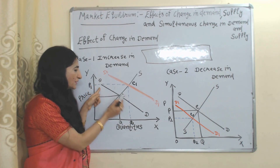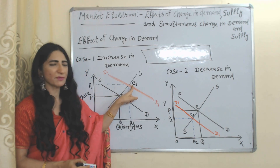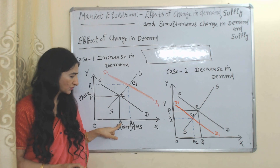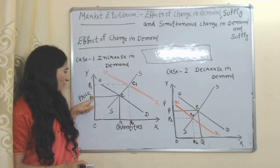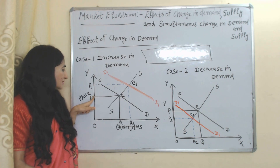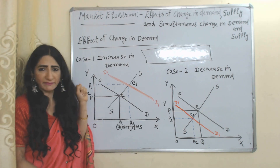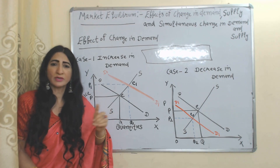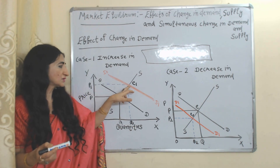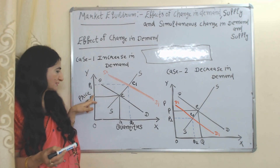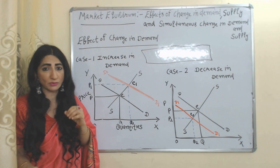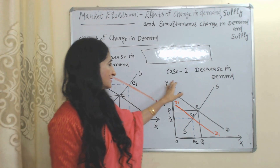Due to increase in demand, our demand curve shifts from DD to DD1. Our new equilibrium point is E1. At this new equilibrium point, you can see our quantity has increased from Q to Q1 and price has increased from P to P1. Quantity increases because demand increased, but why does price increase? Because supply is constant and only demand is increasing, that's why at the new equilibrium point E1 our prices have increased. P1 prices are higher than the original equilibrium price.